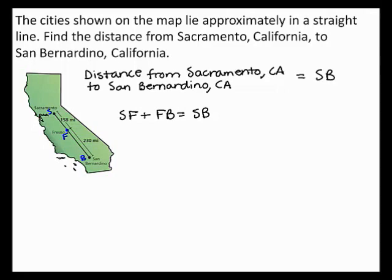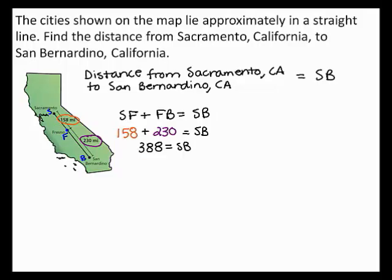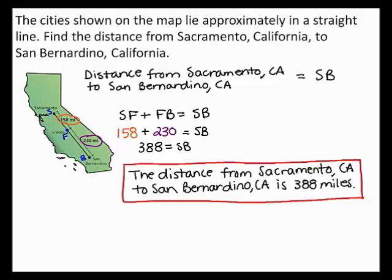From the map, the length of segment SF is equal to 158 miles, and the length of segment FB is equal to 230 miles. 158 plus 230 gives you 388. So, the length of segment SB is equal to 388 miles. Therefore, the distance from Sacramento, California to San Bernardino, California is 388 miles.